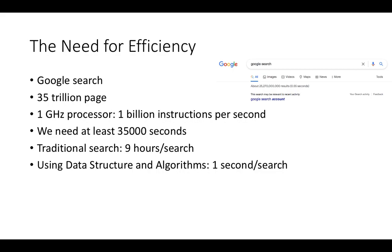Let's take Google Search as an example. On the web there are around 35 trillion pages — that is 35,000 billion pages on the internet. When we write a keyword, we need to search all these pages to get the best result. Our processor is roughly one gigahertz to a few gigahertz, and a one-gigahertz processor can perform around one billion instructions per second — a big number, but still limited.